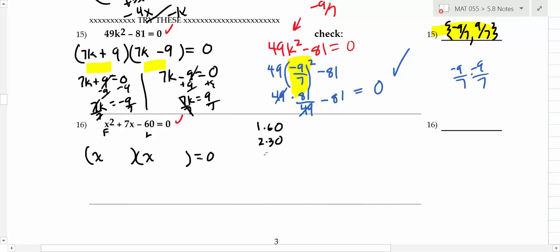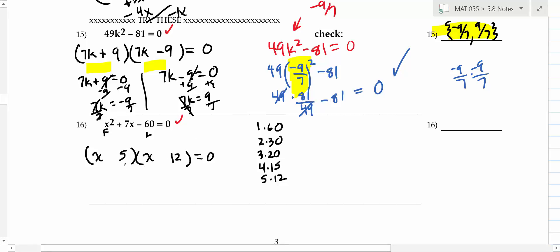For the trinomial, you need to find two numbers that multiply to give 60 and also add up to 7. Eventually you get there: five and twelve. With practice you know your multiplication facts faster. Five and twelve are the right choice. That leaves figuring out the signs: you have 5x and 12x, and you want them to add up to 7x, so it's (x + 12)(x - 5).